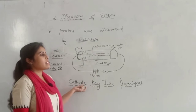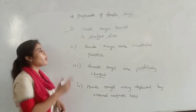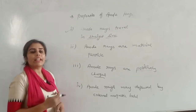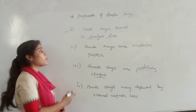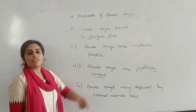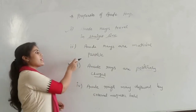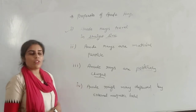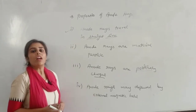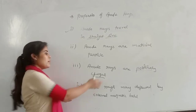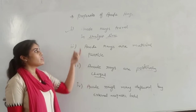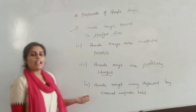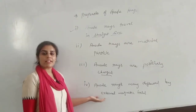Now the properties of anode rays: First, anode rays travel in a straight line — just as electrons in the cathode ray tube experiment move in a straight line, protons also always move in a straight line. Second, anode rays are material particles. Third, anode rays are positively charged, because as seen in the cathode tube experiment they move towards the negative charge — therefore they are positive particles, also known as anode rays or protons, discovered by Goldstein. Fourth, anode rays may be deflected by an external magnetic field.